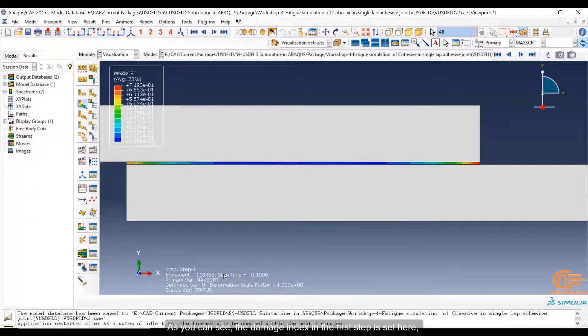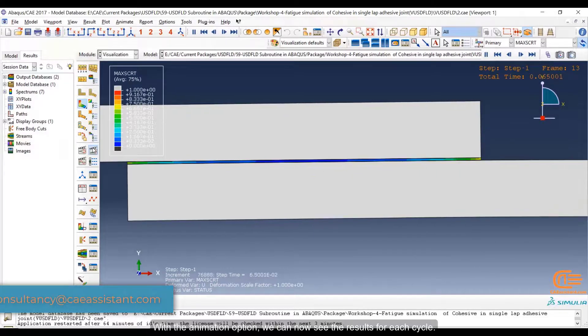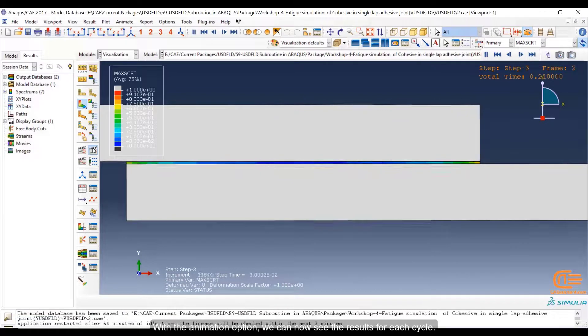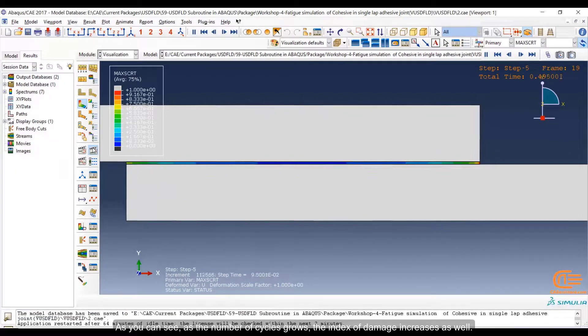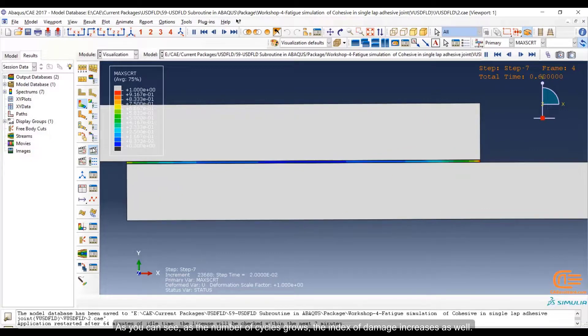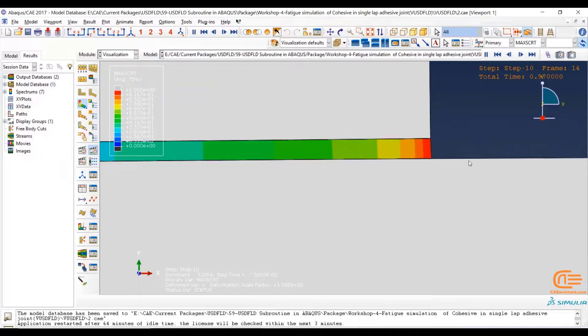As you can see, the damage index in the first step is set here, which is equal to zero cycle, that is, to resemble a static state of about one cycle. With the animation option, we can now see the result for each cycle. As you can see, as the number of cycles grow, the index damage increases as well.